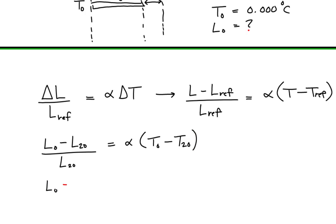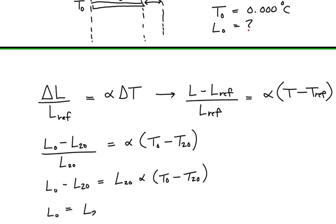Let's isolate the length at 0 degrees Celsius by first multiplying both sides by the length at 20 degrees, then moving the length at 20 degrees to the other side. This gives: the length at 0 degrees equals the length at 20 degrees plus the length at 20 degrees times the coefficient of linear thermal expansion times the difference in temperatures between 0 degrees and 20 degrees Celsius.